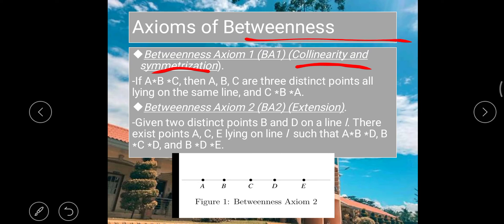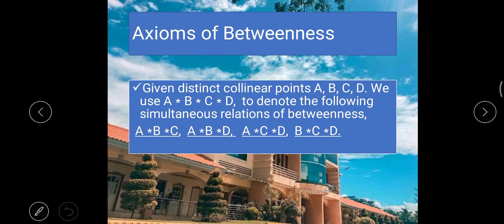They are all on the same line — that is collinearity. The second axiom is extension: given two distinct points B and D on a line L, there exist points A, C, and E lying on line L such that B is between A and D, C is between D and B, and B is between B and E. This axiom ensures that there are points between B and D and that the line BD does not end at either B or D.